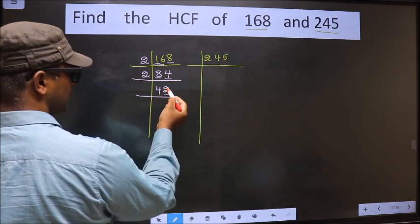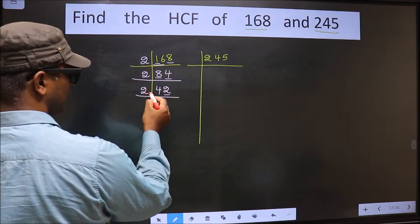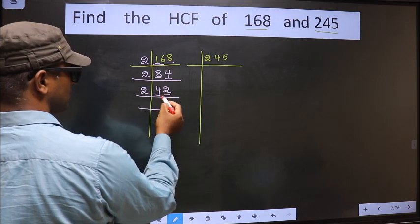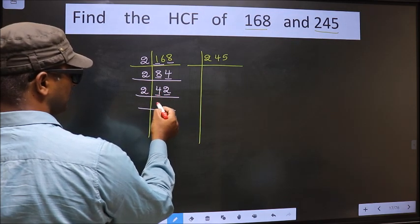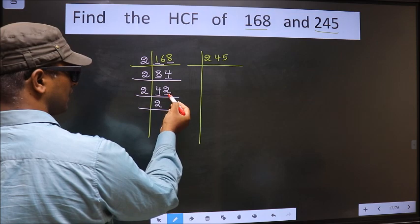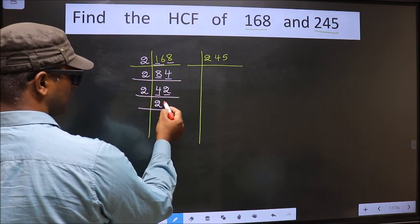For this number, last digit is 2, even, so we take 2 here. The first number is 4, when do we get 4 in 2 table? 2, 2 is 4. The other number 2, when do we get 2 in 2 table? 2, 1 is 2.